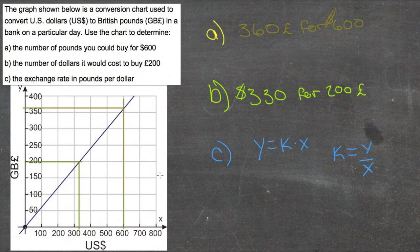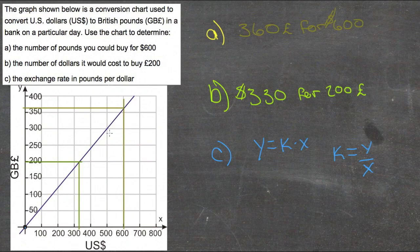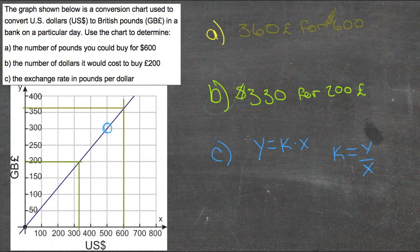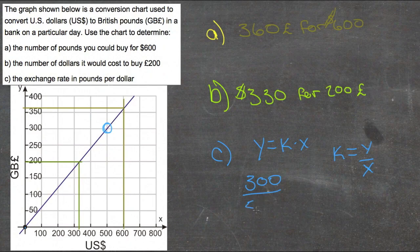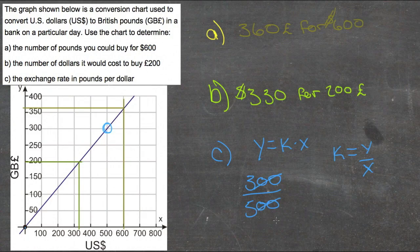So if we find a point on the graph where we know what the values are, like for instance right here, we have 500 and 300, we could take Y over X to find our constant proportionality. So here our Y value is 300, and our X value is 500. So at 300 divided by 500, our zeros will cancel. So we get 3 fifths equals K.